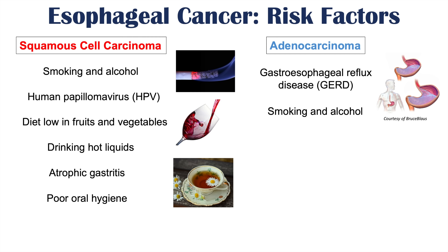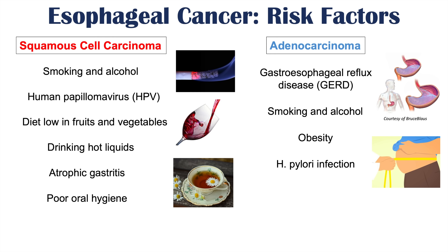Smoking and alcohol are also risk factors for adenocarcinoma. Obesity is another, as a larger abdomen creates pressure that can cause inappropriate opening of the lower esophageal sphincter, pushing gastric contents upward. Infection with H. pylori and having had a cholecystectomy (gallbladder removal) are additional risk factors as well.